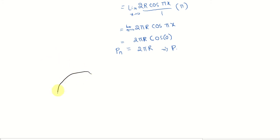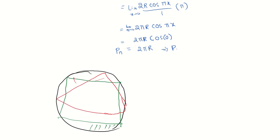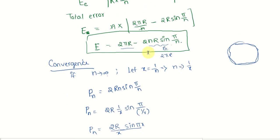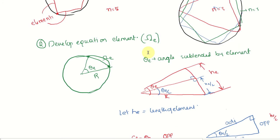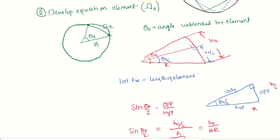As shown, when we divide the circle into 3 elements the gap between the chord and arc is large; with 4 elements the gap decreases; with 5 elements it decreases further. As you increase the number of elements, the error goes on decreasing, and for infinite elements the error becomes 0 — accuracy increases and the approximation converges to the actual solution. That is the application of the FEM concept to finding the circumference of a circle.